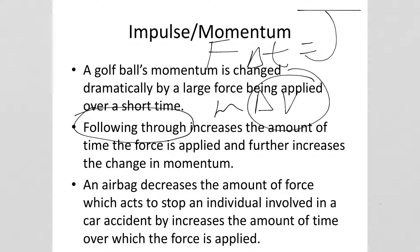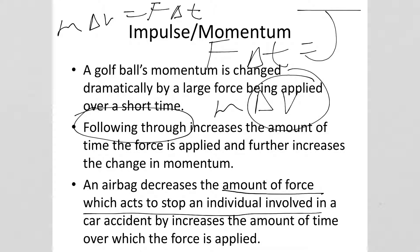Another way to think about impulse is by thinking about airbags. An airbag decreases the amount of force stopping an individual during a car accident by increasing the amount of time. The momentum of the person has to change by a fixed amount — their speed has to go from whatever speed they're at to zero. But the airbag increases the time, so the stopping force can be smaller. If the stopping time were very small, the force would be very large and cause damage. It's also the reason that when you jump off something high, you want to bend your legs — bending your legs increases the stopping time, thereby decreasing the stopping force, helping to prevent injury.